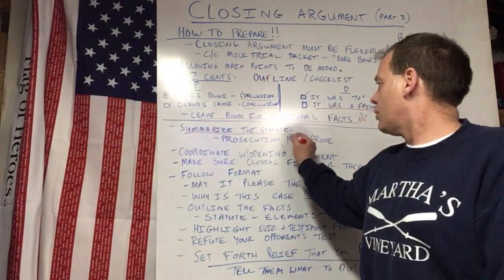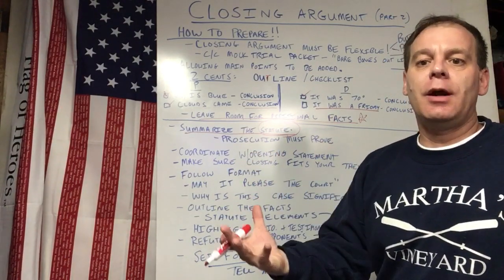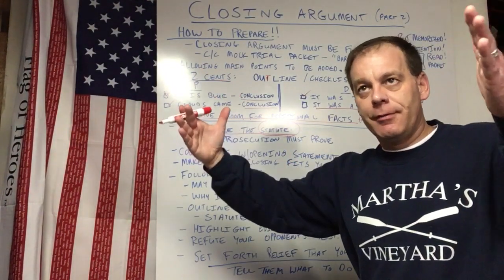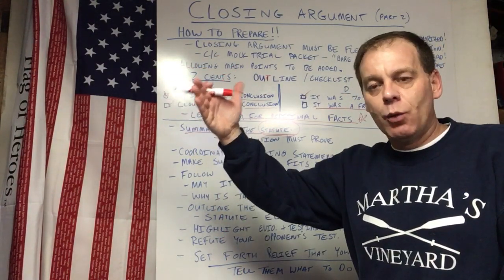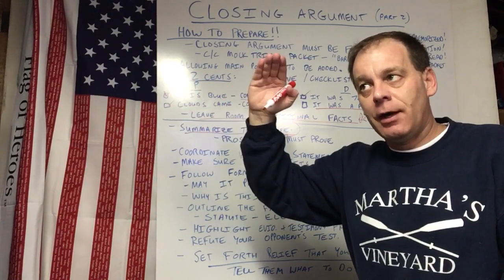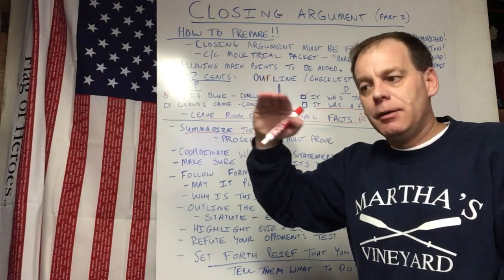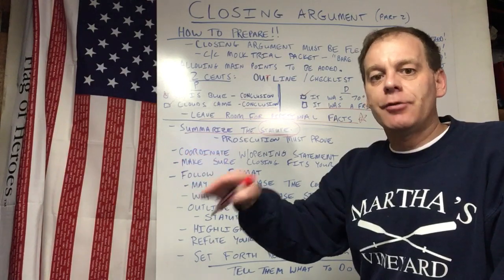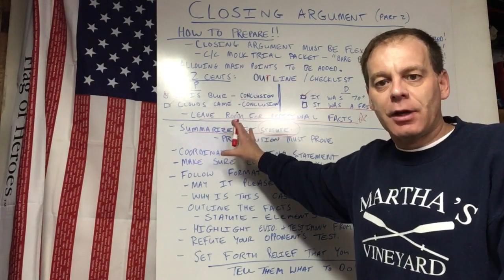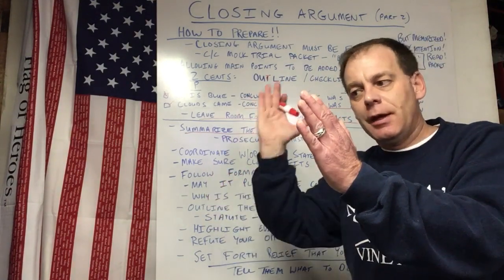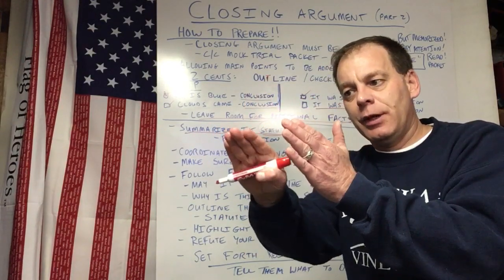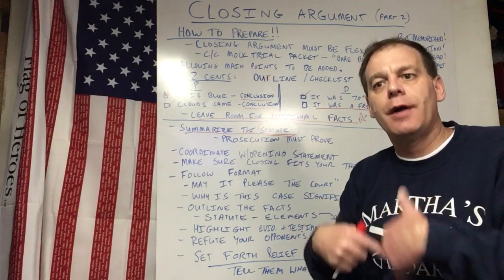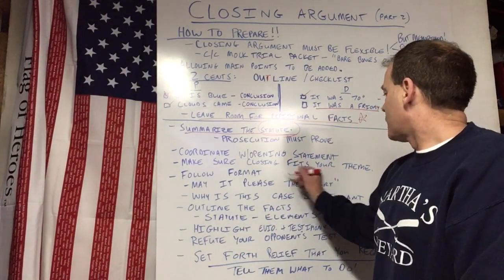One important thing to do is summarize the statute — what is the law in your case and what does the prosecution have to prove. You want to coordinate your closing argument with the opening statement. The opening statement told the jury what the evidence was going to show; now in your closing, remind them what your team promised and deliver on it. Go back and say, 'We told you you were going to hear from this witness — here's what they told you.' In closing argument, you can also tell the jury why that testimony is important and what inferences they should draw from it.